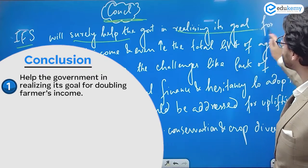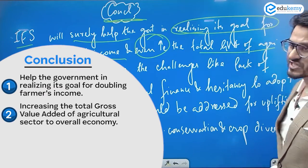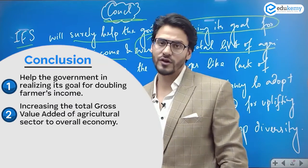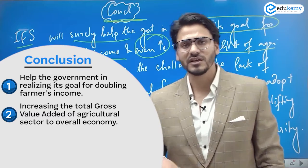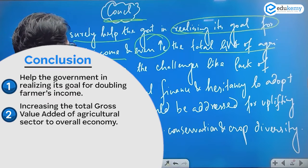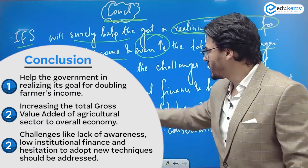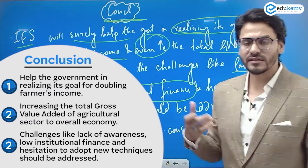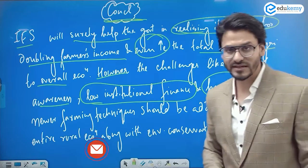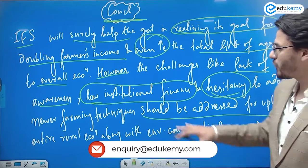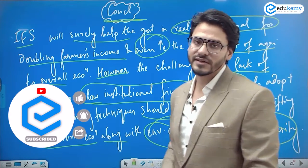In conclusion, an integrated farming system will help the government realize its goal of doubling farmers' income and increasing the gross value added (GVA) of the agricultural sector to the overall economy — since the agricultural share in GDP is declining. However, challenges like lack of awareness among farmers, low institutional finance, and hesitancy to adopt new agricultural practices must be addressed to uplift the rural economy, along with environmental conservation and crop diversity.